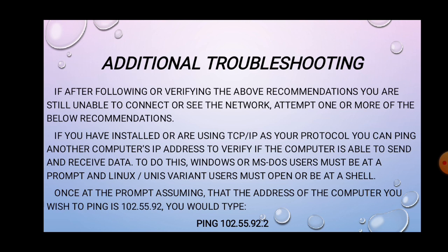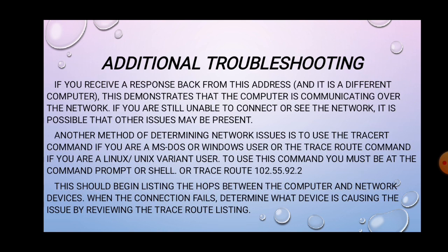Additional troubleshooting. If you are using TCP/IP as your protocol, you can ping another computer's IP address to verify if the computer is able to send and receive data. To do this, Windows or MS-DOS users must be at the command prompt, and Linux or Unix variant users must open or be at the shell. Assuming the address of the computer you wish to ping is 192.55.92.2, if you receive a response back from this address and it is a different computer, this demonstrates that the computer is communicating over the network.